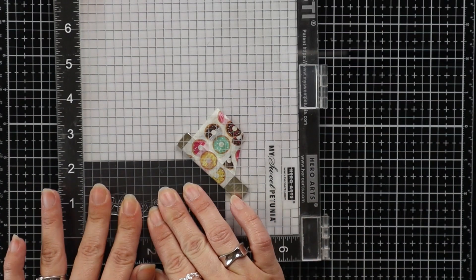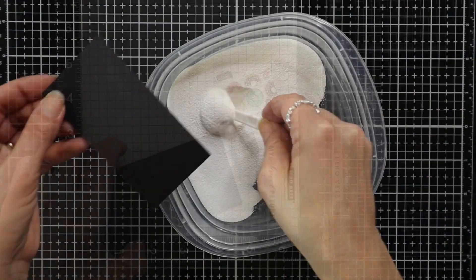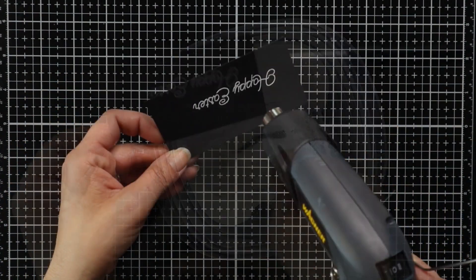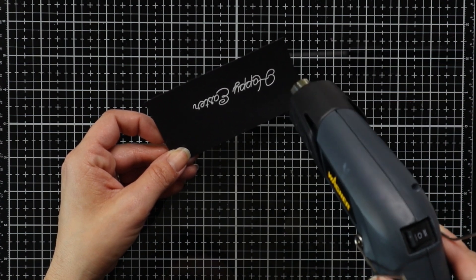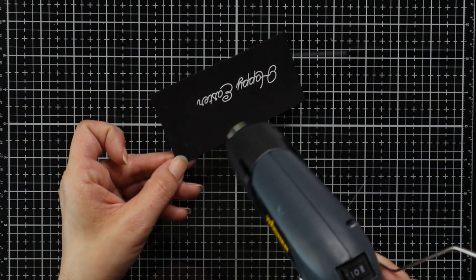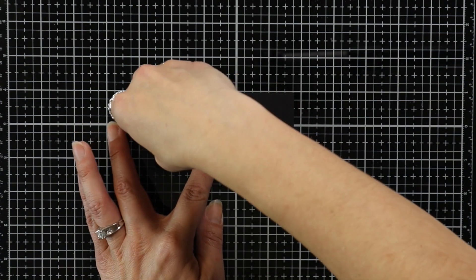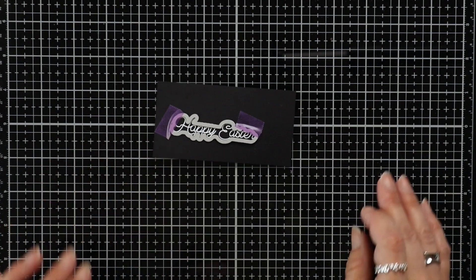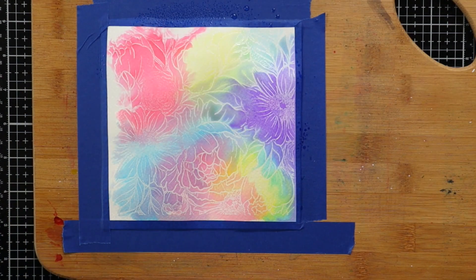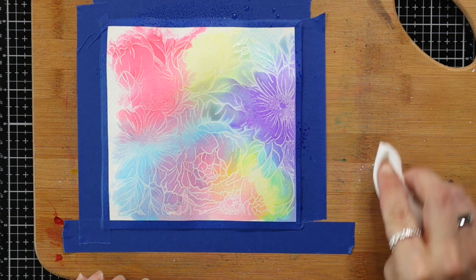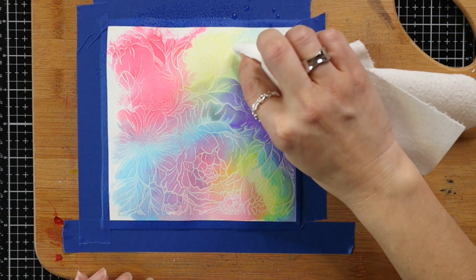Then I'm going to sprinkle on white embossing powder. I thought this would really pop from my colorful background and then after I tap off all of that excess I'm going to heat that with my heat tool. One of the really great things about Honey Bee Stamps sentiment sets or any of their sets is they have coordinating dies for almost everything. So I lined up that coordinating sentiment and die cut that out and I'm going to set that off on the side for just a moment while I come back to my background.